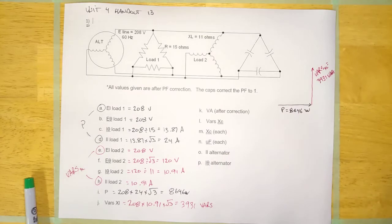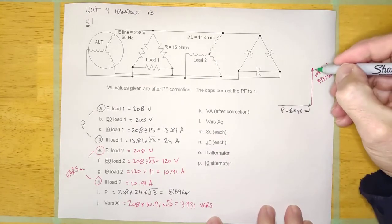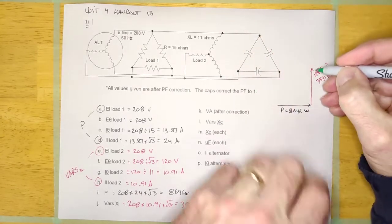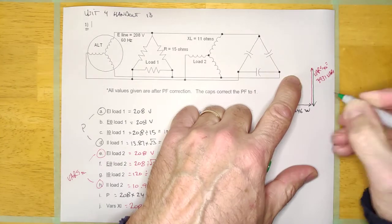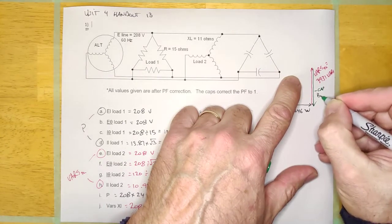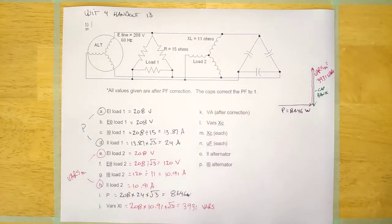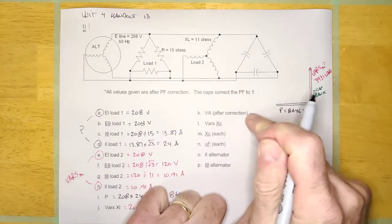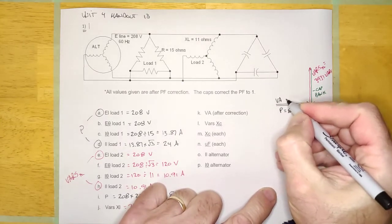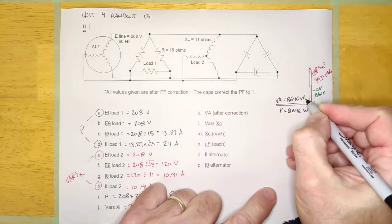Since we're correcting to unity, that capacitor bank is going to take care of all of the reactive power. Your VA, once corrected to unity, is going to be equal to the watts: 8,646 volt-amps.